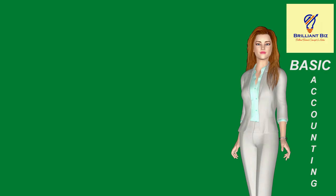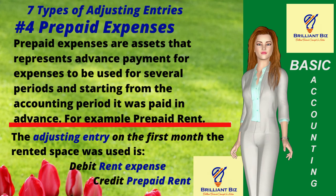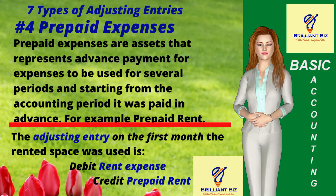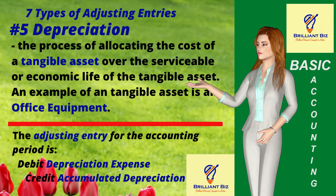Four: prepaid expenses. These represent advance payment for expenses to be used for several periods, starting from the accounting period it was paid in advance — for example, prepaid rent. The adjusting entry on the first month the rented space was used is debit rent expense and credit prepaid rent for one month's rent only.